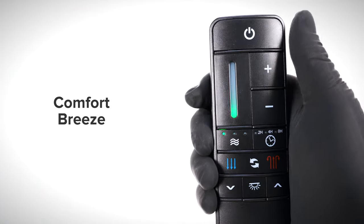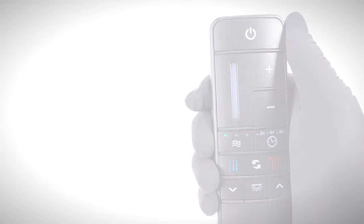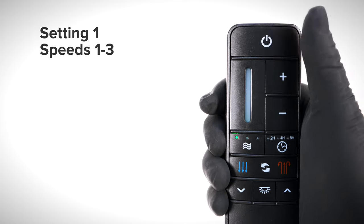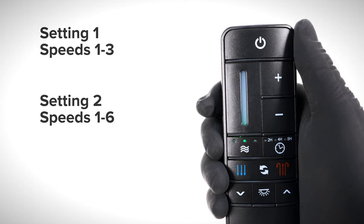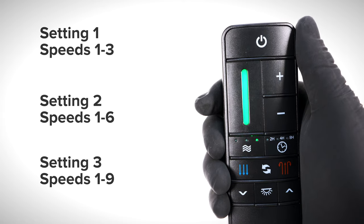The comfort breeze button activates the comfort breeze function, a feature that produces a natural feeling breeze by alternating between lower and higher fan speeds. Setting 1 alternates through speeds 1 through 3, setting 2 alternates through speeds 1 through 6, and setting 3 alternates through speeds 1 through 9.